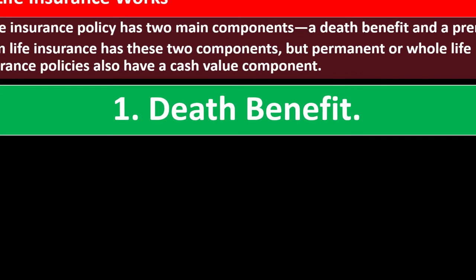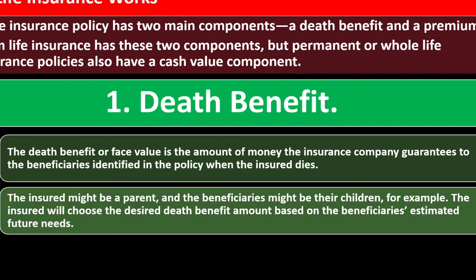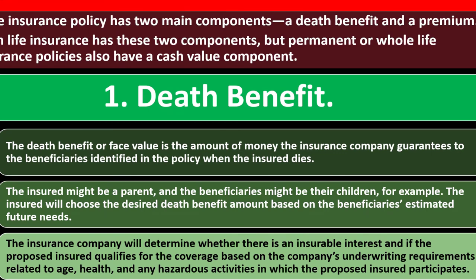The death benefit or face value is the amount of money the insurance company guarantees to the beneficiaries identified in the policy when the insured dies — for example, the insured might be a parent and the beneficiaries might be their children. The insured chooses the desired death benefit amount based on the beneficiaries' estimated future needs, and the insurance company determines if there is an insurable interest and if the proposed insured qualifies based on underwriting requirements related to age, health, and any hazardous activities.